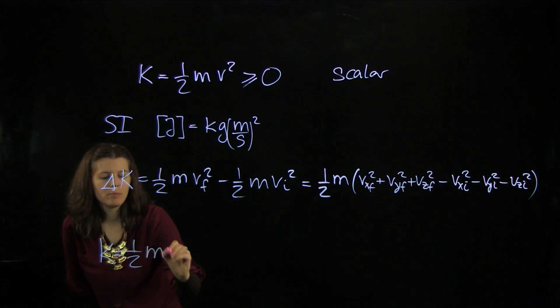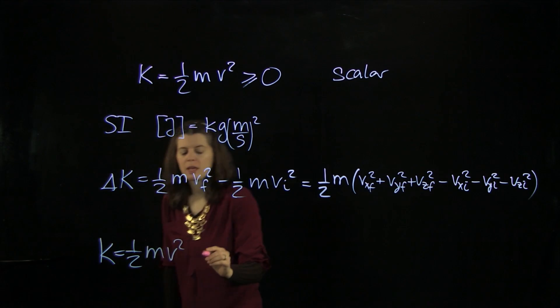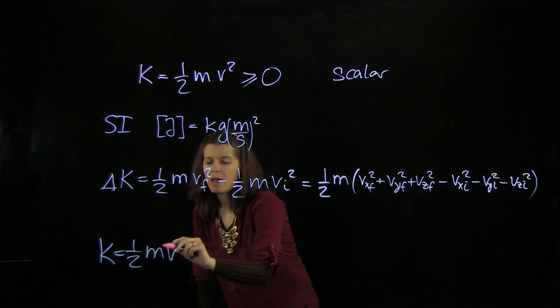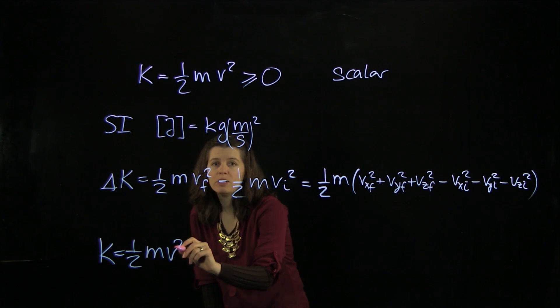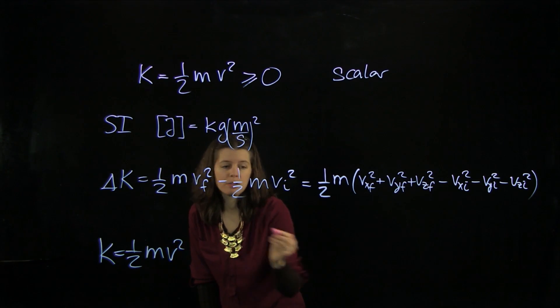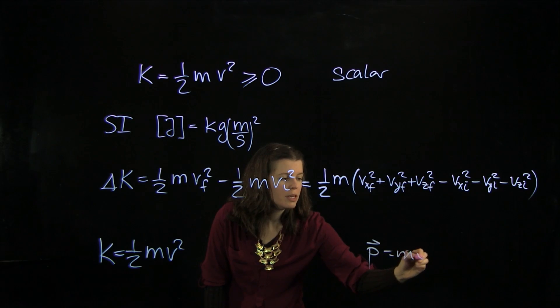K equals 1/2 mv². If we multiply this by m upstairs and downstairs, we're going to have m²v², and that's actually p². Remember, p equals mv.